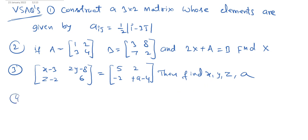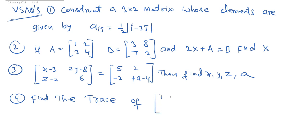Fourth question: find the trace of the matrix [1, 3, −5; 2, −1, 5; 1, 0, 1].